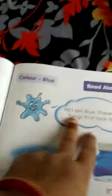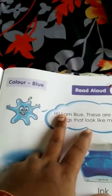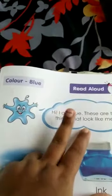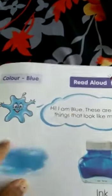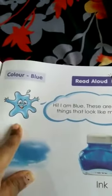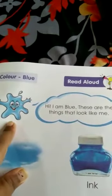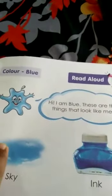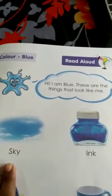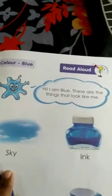Look at this. Now read this sentence with me: Hi, I am blue. What is saying there? First you have to say Hi, I am blue. These are the things that look like me. What the blue color says? That I am blue and these are the things that look like me.